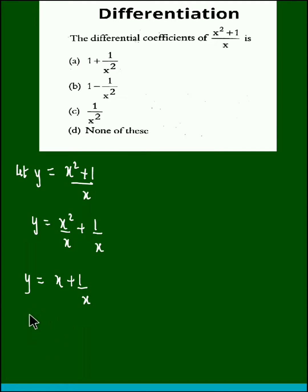And now we could easily differentiate with respect to x and we obtain dy by dx as... the derivative of x is 1 plus the derivative of 1 by x is minus 1 upon x squared. So the final answer is 1 minus 1 upon x squared.